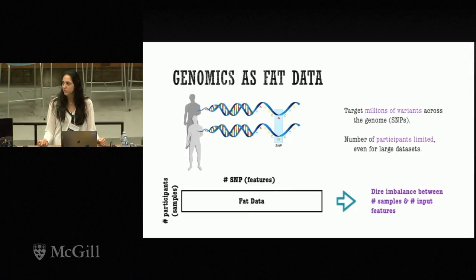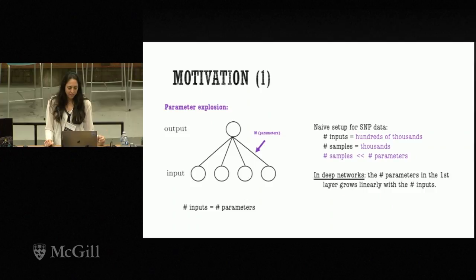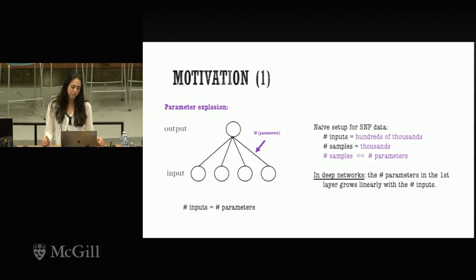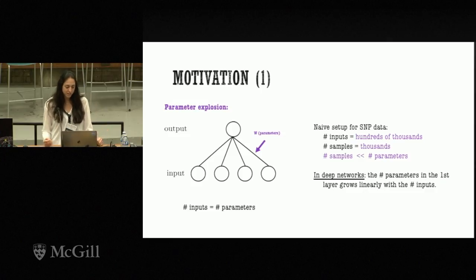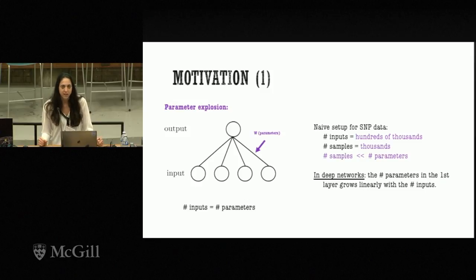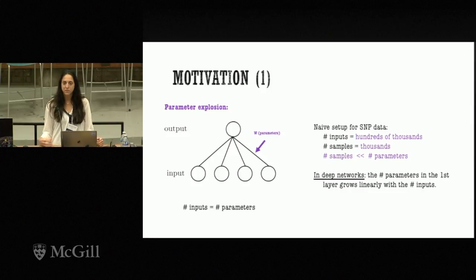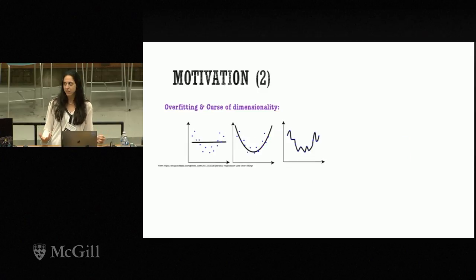Given this imbalance between the number of samples and the number of input features, several challenges appear. In a simple neural network connecting all inputs to one output neuron, with SNP data having feature vectors in the hundreds of thousands, we have as many parameters as features. In deep networks, the first layer's parameters grow linearly with the number of input features — a parameter explosion — which increases the risk of overfitting when samples are insufficient.